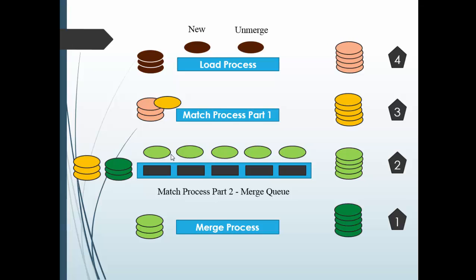We know there are two kinds of merges: auto merge and manual merge. If you are doing auto merge, those records will be put on the merge queue. If you are doing manual merge, those records will be put on the manual merge queue. Those records which are ready to get merged — meaning those present on the merge queue — have their consolidation indicator set to 2.